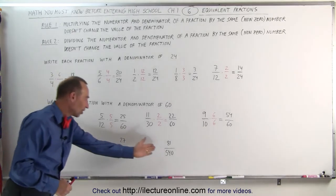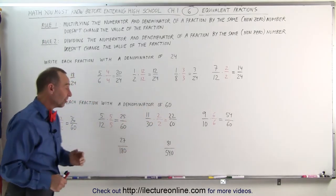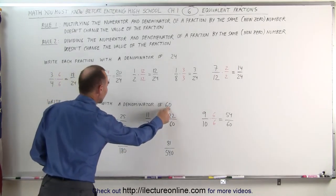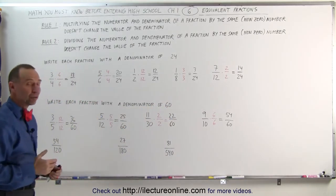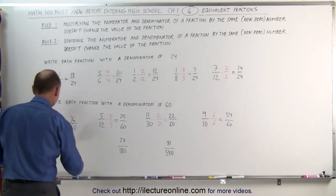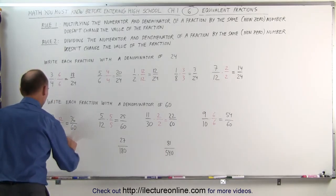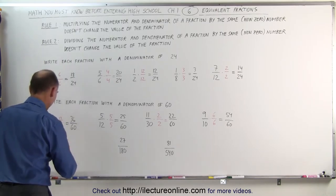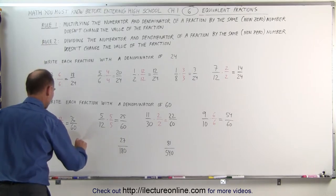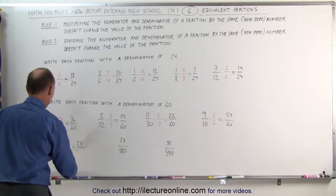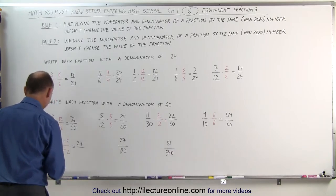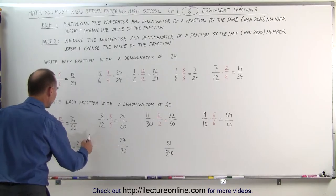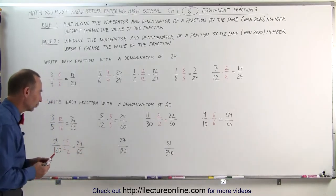Again, I have three fractions and I want to write them with the denominator equal to 60. In this case I need to reverse the process. How many times does 60 fit into 120? The answer is 2 times, which means if I divide the numerator by 2 and I divide the denominator by 2, I get the following fraction: 54 divided by 2 gives me 27, and 120 divided by 2 gives me 60. So 27 divided by 60 is the equivalent fraction to 54 divided by 120.